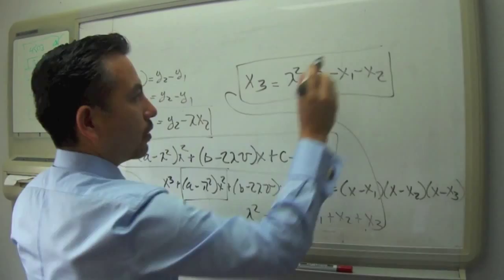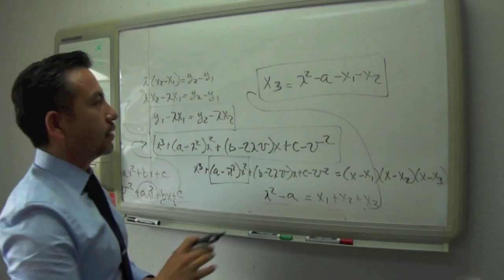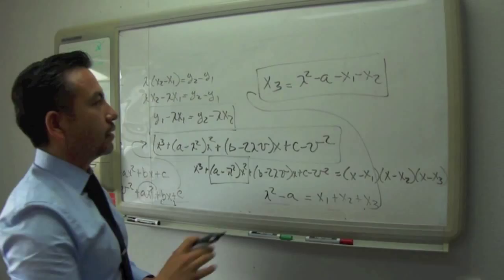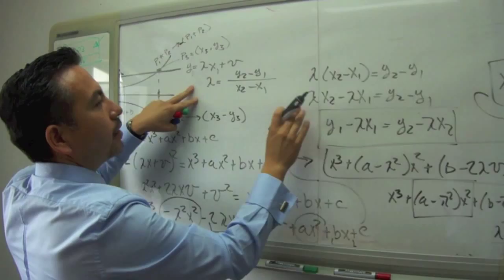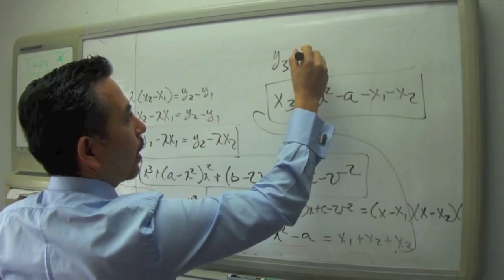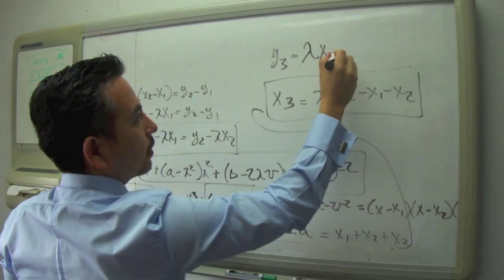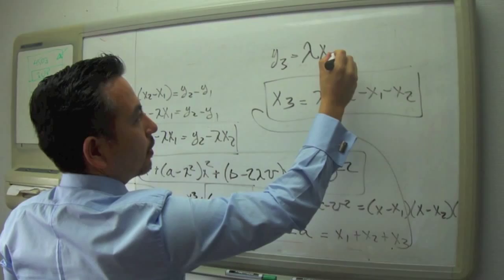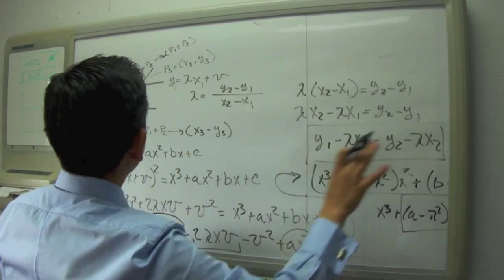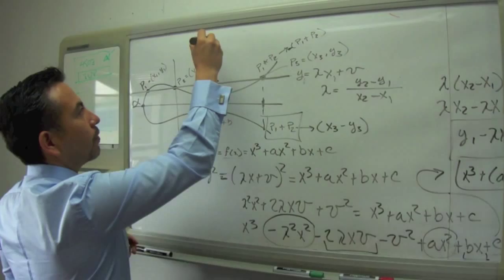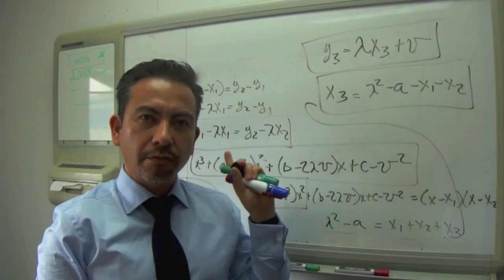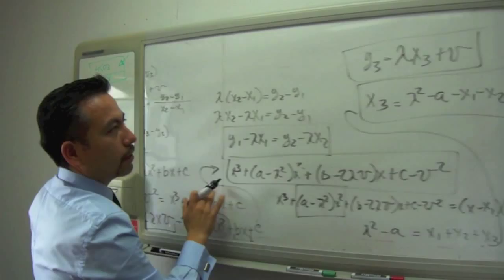So x3 equals lambda² - x1 - x2. And if we know x3, then of course we know y3, because y3 equals the slope from the two previous points times x3, plus b. These are the coordinates for this point, and that's what we want — because with this we can compute these points, we can find these coordinates. This is only for adding two points, two rational points, which is the base of elliptic curve cryptography. This is just for addition of two points, not for point doubling, but we're going to prove it mathematically, get the code, and put it in a computer.